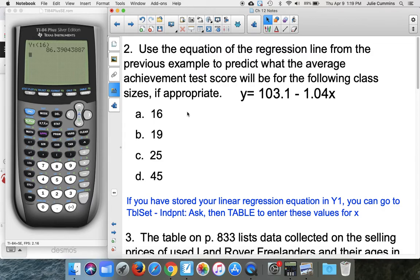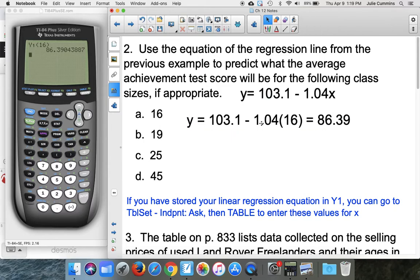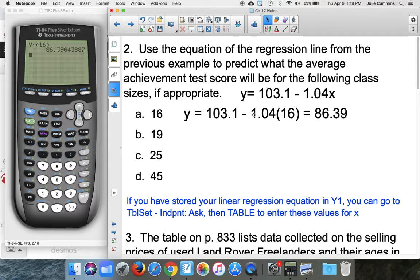That is the exact same thing as you would get as if you had actually plugged in. Well, not the exact because this is rounded. But what the calculator did for you was this, and it got 86.39. But the calculator did it better because it did not use these rounded values, okay?